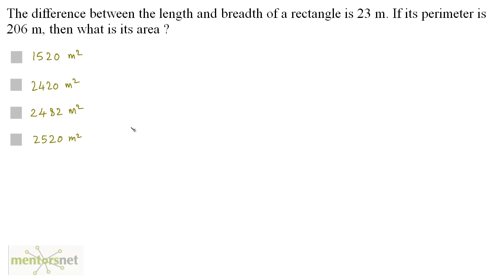The difference between the length and breadth of a rectangle is 23 meters. If the perimeter is 206 meters, then what is its area?